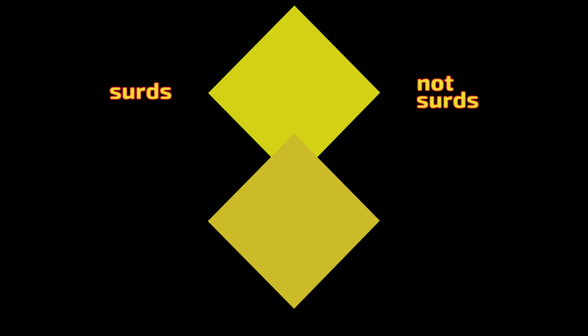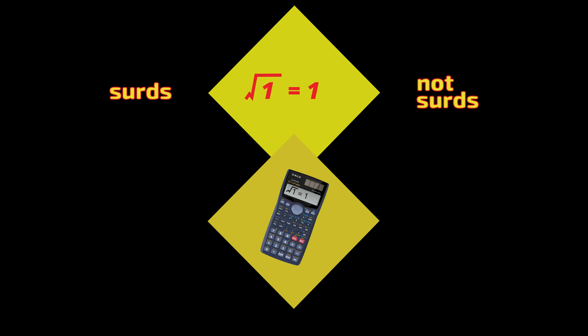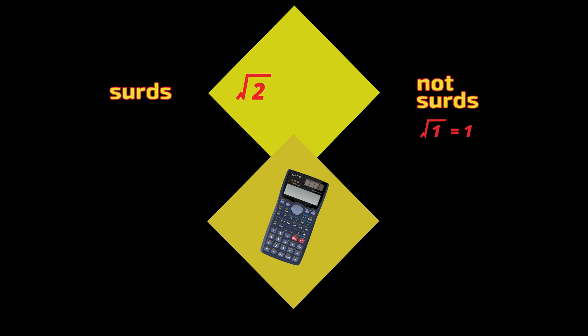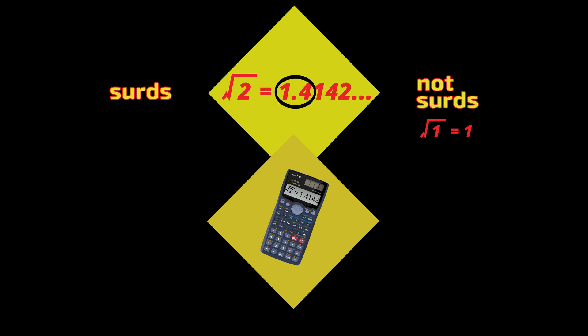Not all square roots are surds. For example, the square root of 1 is exactly 1. This is not a surd because the square root is an exact number. But the square root of 2 is 1.4142 and so on. To substitute this into a mathematical calculation is awkward. Often we round this to fewer decimal numbers like 1.41 or even 1.4, but those are only approximations — they are not exact.